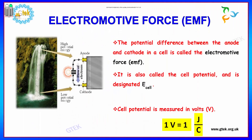Now we will talk about Electromotive Force. The potential difference between the anode and cathode in a cell is called Electromotive Force. It is also called cell potential and is designated by E°. The cell potential is measured in volts, where 1 volt equals joules divided by coulombs (J/C).